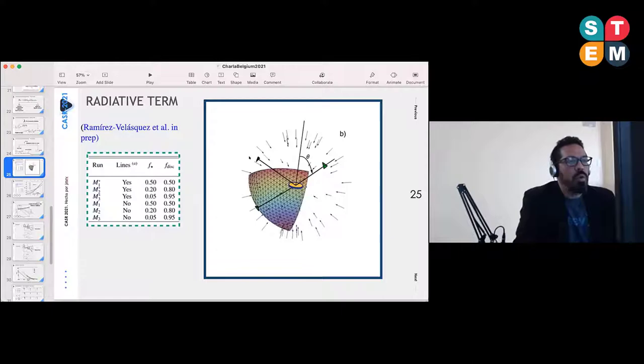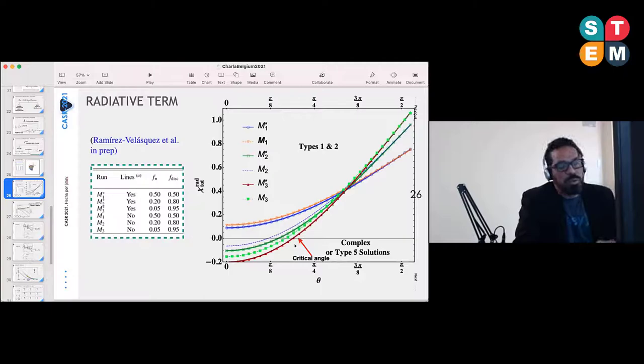One thing I had to be very careful about was the angular dependence of course of this radiative term, as I said, because whenever you have a radiative term below zero, then you're going to have complex solutions or type five solutions which are not plausible.